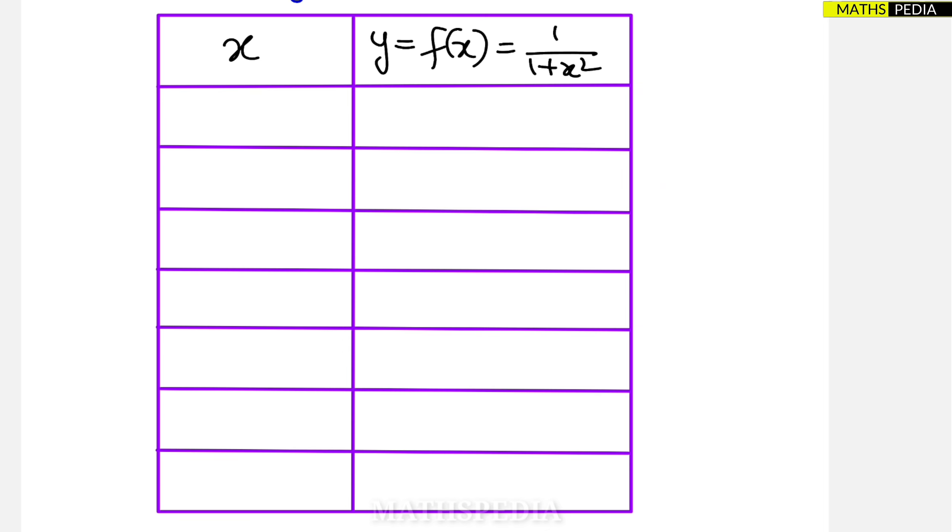Now next, x value I have to give. So starting with the lower limit which is 0, then I have to jump to 2, because h value is 2. So 0 plus 2 is 2, 2 plus 2 is 4, 4 plus 2 is 6, 6 plus 2 is 8, 8 plus 2 is 10, 10 plus 2 is 12. See, we have arrived at the final interval. This was nothing but b, this was nothing but a.